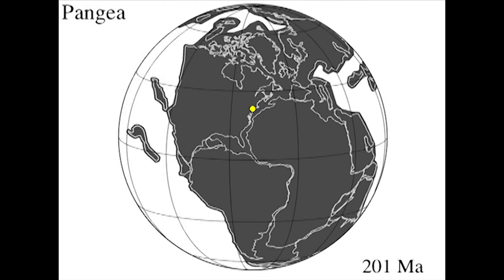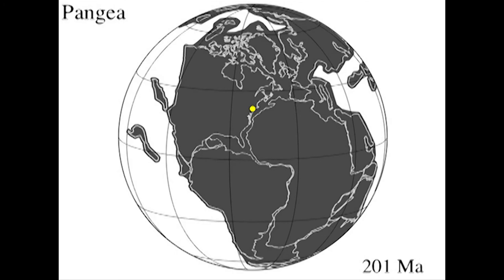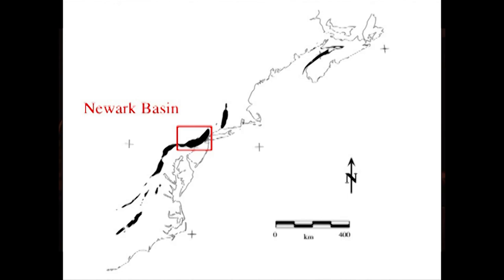As North America began to pull apart — continents drift — North America went this way, South America went this way. The crust was stretched, the crust broke. Huge chunks of land subsided and filled with mud and silt from the surrounding mountains. The remnants of those big holes that formed as North America and Africa drifted apart are preserved today in eastern North America, where these black blobs are. And this one in particular is called the Newark Basin.